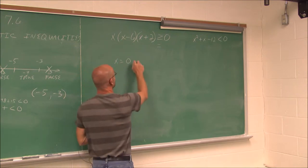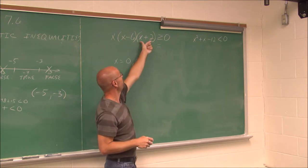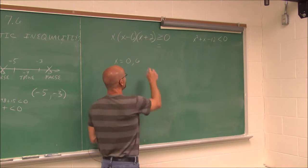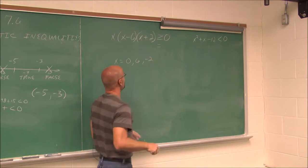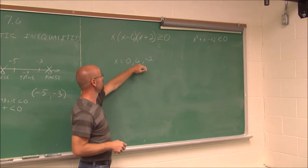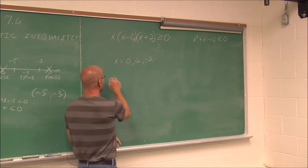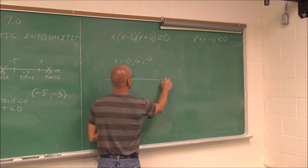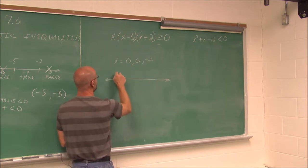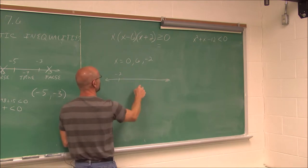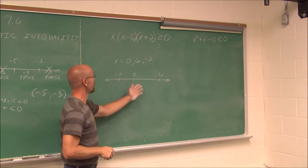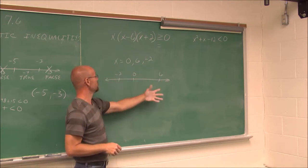What factor would make this 0? Well, if x was negative 2. So these are my critical points. I'm going to use them to break up the number line. We have the smallest value of negative 2, then 0, and then 6 on our number line from least to greatest.